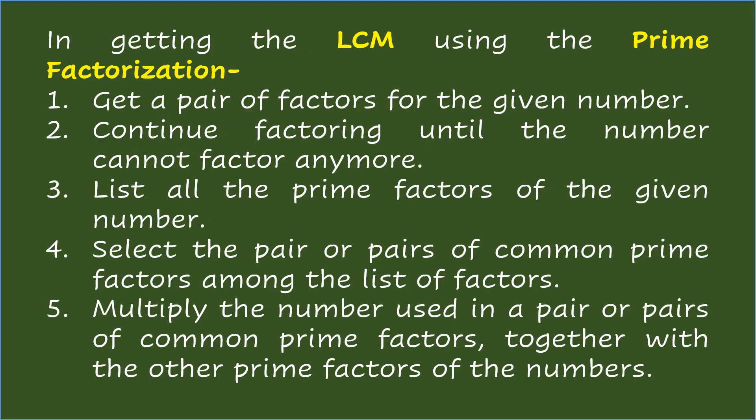In getting the LCM using prime factorization: get a pair of factors for the given number. Continue factoring until the number cannot be factored anymore. List all the prime factors of the given number. Select the pair or pairs of common prime factors among the list of factors. Multiply the number used in a pair or pairs of common prime factors together with the other prime factors of the numbers.